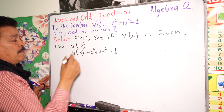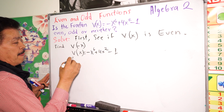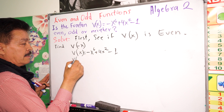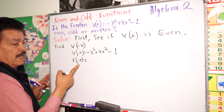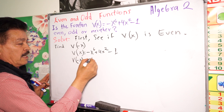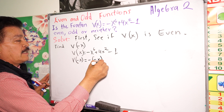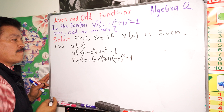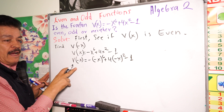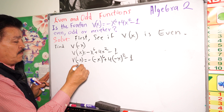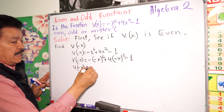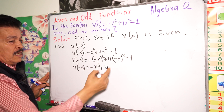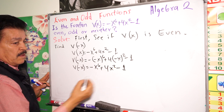Next step — remember the rule I wrote before. So we are going to have f of negative x equals negative x to the sixth power plus 4 times negative x to the second power minus 1. Simplifying: we get negative x to the sixth power plus 4x to the second power minus 1, because negative times negative is positive.